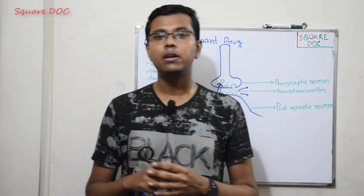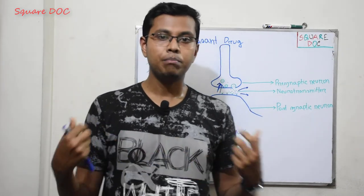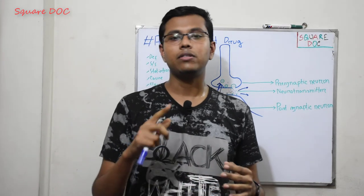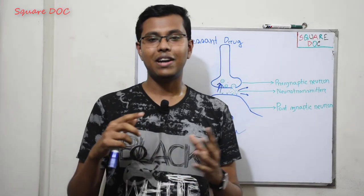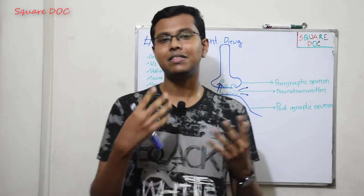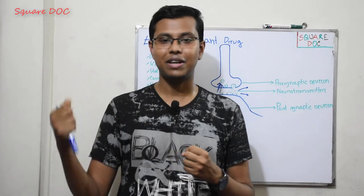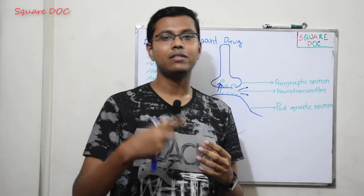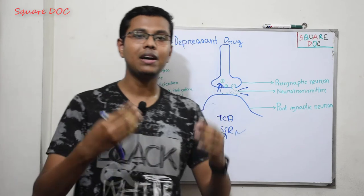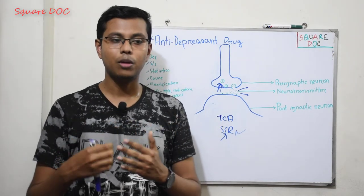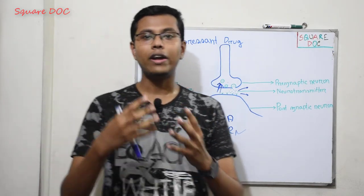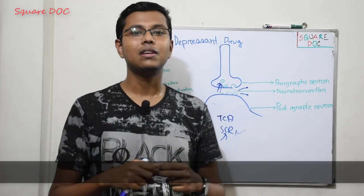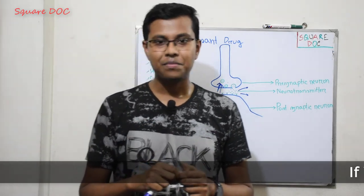TCA is compared to SSRI. The next class is SNRI — Selective Serotonin and Norepinephrine Reuptake Inhibitor. It inhibits both serotonin and norepinephrine reuptake, ultimately producing an antidepressant effect.